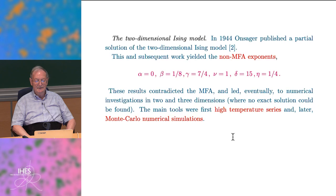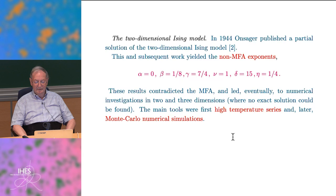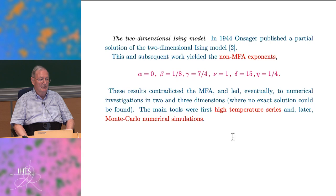In the 1930s, Landau theory was believed to be more or less correct. However, the first problem arose in 1944 when Onsager published a partial solution of the two-dimensional Ising model, and subsequent work yielded non-mean-field exponents: alpha equals zero, beta equals one-eighth, gamma equals seven over four, nu equals one, delta equals fifteen, and eta equals one quarter. This contradicted mean field theory. After that, physicists made numerical investigations in two and three dimensions to understand the issue. Some colleagues thought the Ising model was special precisely because it could be solved.